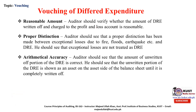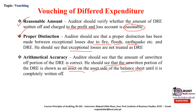The auditor should verify whether the amount of deferred revenue expenditure charged to the profit and loss account is reasonable, which is a matter of judgment. The auditor should also see that a proper distinction is made between exceptional losses — such as losses due to fire, flood, or earthquake — which should not be treated as deferred revenue expenditure. He should verify that the unwritten portion of deferred revenue expenditure is correctly shown as an asset on the balance sheet until it is completely written off.